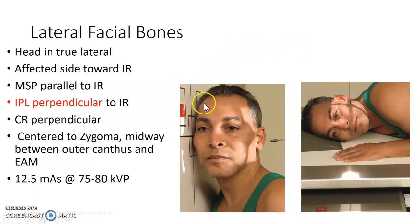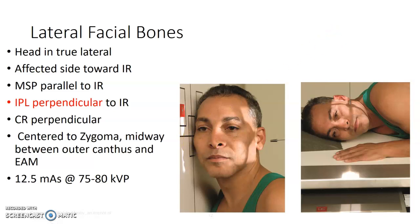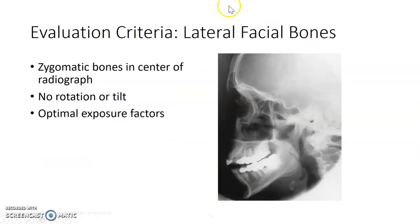You may have to slide a sponge in between the bucky and the patient's head to help keep them in position. You want the affected side toward the IR. If this patient is doing a right lateral and they have pain on the right, put the right side down. If there's no pain on either side, you can use the left — whichever doesn't matter.